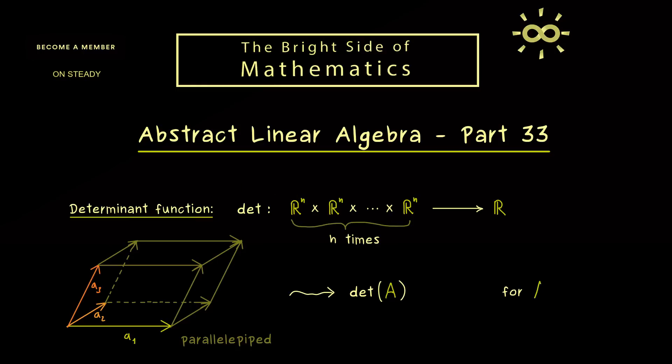However, since we have this calculation formula, we can also extend the whole function to complex valued matrices. Therefore, in general, the determinant of a matrix is a complex number.